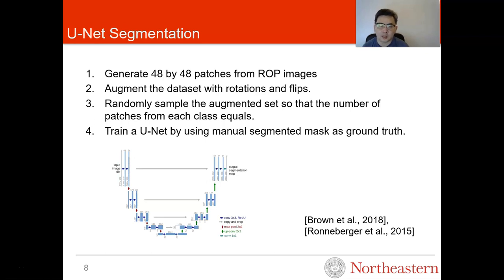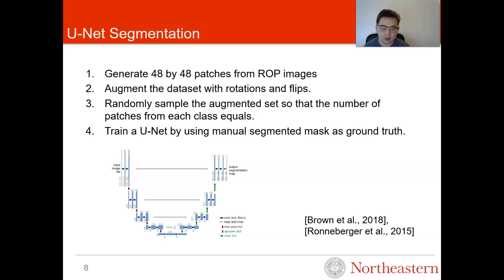We first generate U-Net segmentations for ROP images. In the first step, we generate 48 by 48 patches from ROP images. Second, we augment the dataset with rotation and flips. Then we randomly sample the augmented set so that the number of patches from each class is equal. Finally, we train a U-Net model using manual segmentation as ground truth.